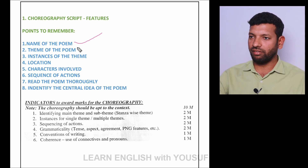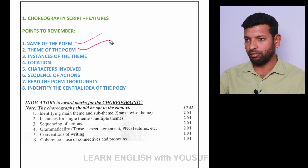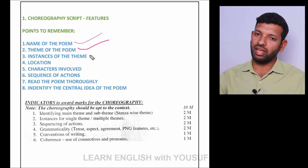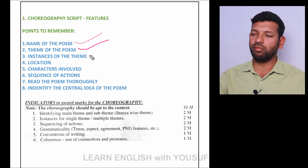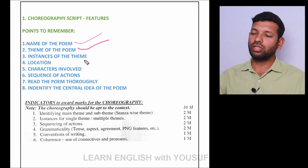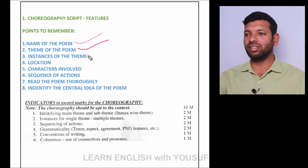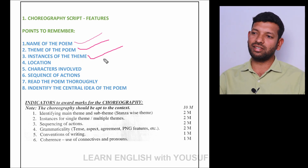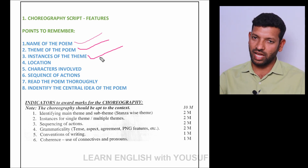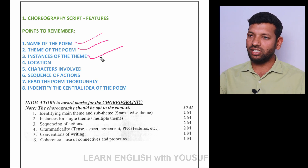The second feature is the theme of the poem — what is actually the theme, the overall centered theme that you have to take from the poem after reading it. So you need to read the poem again and again so you can understand it. The third feature is instances of the theme — the examples of the theme. Suppose there are five stanzas in the poem; each stanza carries some particular theme.